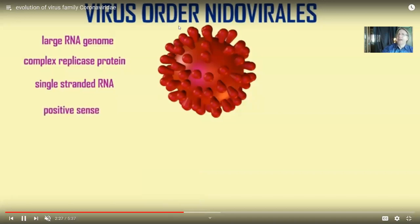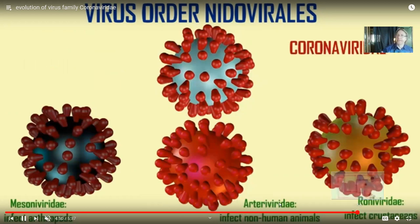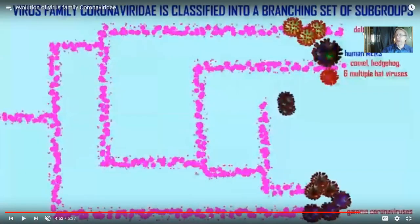And so, there's a virus order, Nidovirales, which then diversified as mutations occurred, new viruses evolve. And it then formed a number of families of coronavirus, including the coronavirus family. Then the coronavirus family evolved. And so, just like in the carnivores, you have the cat branch, the dog and bear branch, there are different types of coronaviruses.